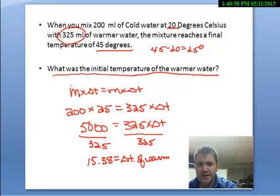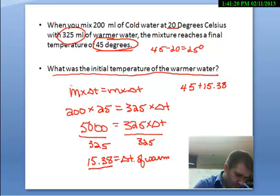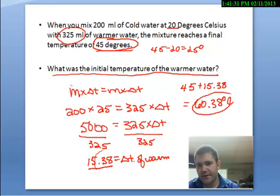But I'm not done. Remember, it asked me what was the initial temperature of the warm water. I know that the final temperature of the mixture is 45 degrees. So that means that my warm water must have been warmer than 45 degrees. And we know its change in temperature is 15.38. So I take my final temperature of 45 plus 15.38. And I get that the initial temperature of the water must have been 60.38 degrees Celsius in order for the temperature to warm up 200 milliliters of 20 degree water to 45 degrees.